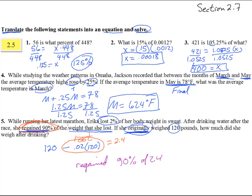So 90% of 2.4, 0.9 times 2.4, that is 2.16 pounds.